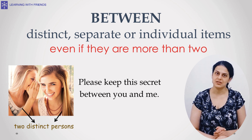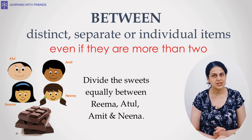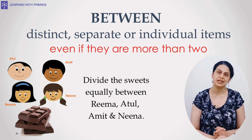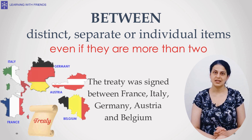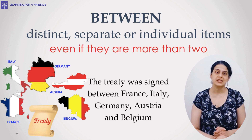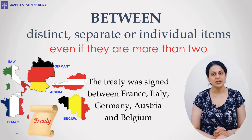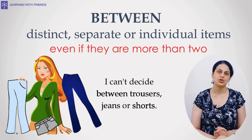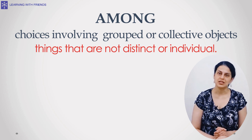For example, it is correct to say 'Please keep this secret between you and me' — that is between two distinct entities. But it is also absolutely correct to say 'Divide the sweets equally between Reema, Atul, Amit, and Nina,' because they are individual people. Another example: 'The treaty was signed between France, Italy, Germany, Austria, and Belgium' — again using 'between' because we are talking about distinct countries. Likewise: 'I can't decide between trousers, jeans, or shorts.'